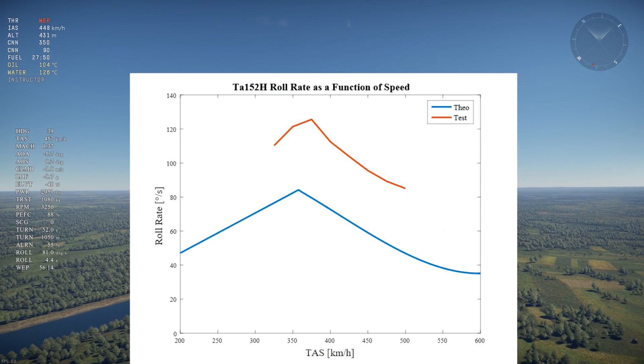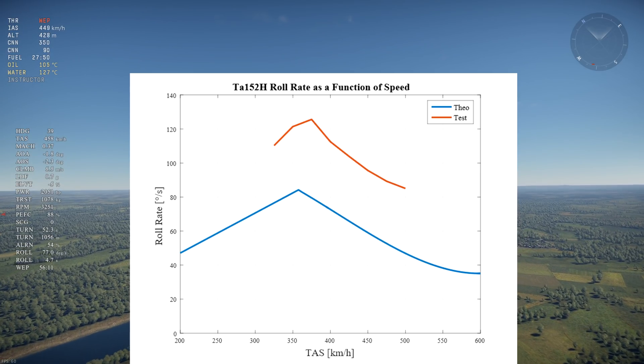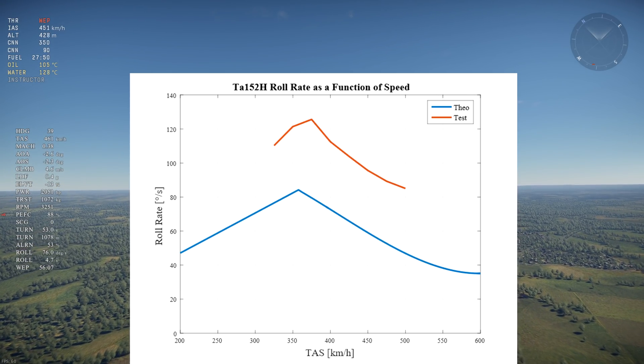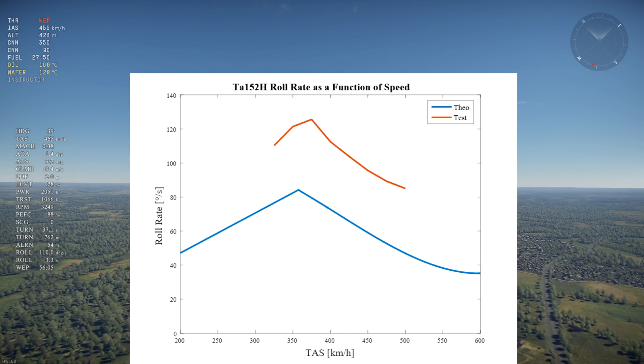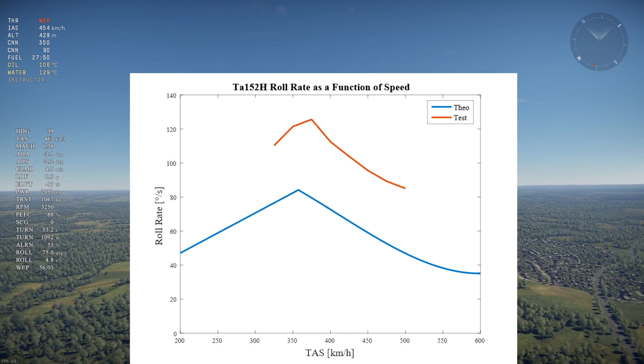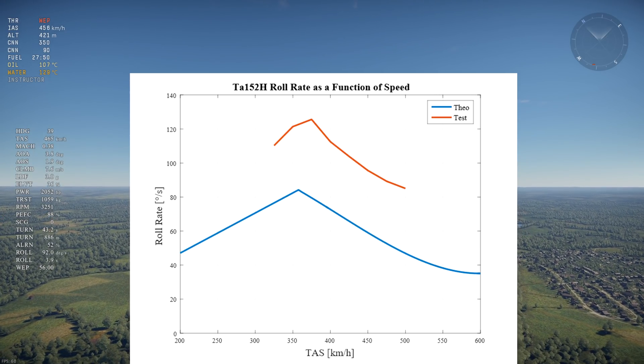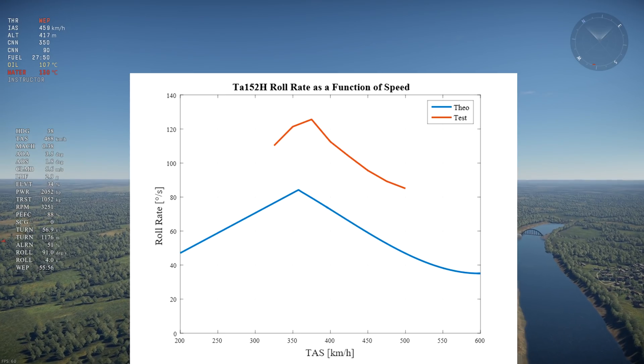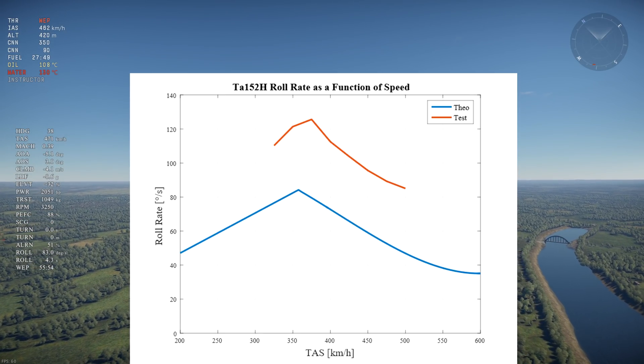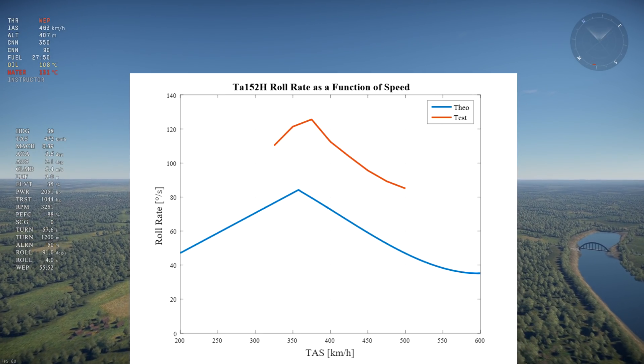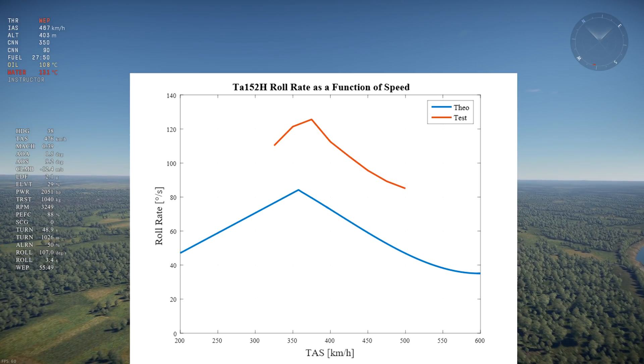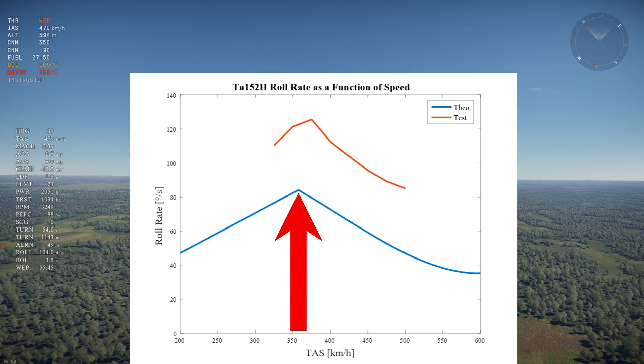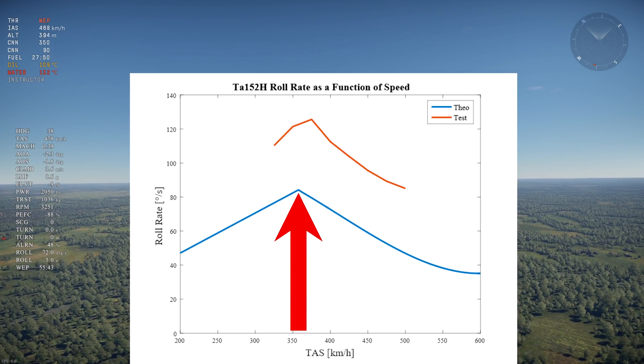On this graph you can see the theoretical roll rate using the formula and taking into account control stiffening in blue, and the test flight roll rate in red. The reason why the test flight roll rate is significantly higher than the theoretical roll rate is because I'm not taking into account secondary contributors to roll such as rudder, side slip, and dihedral. The theoretical curve still predicts the correct tendency however. You can clearly see that the roll rate increases until it reaches the control stiffening speed of 360 kph and then decreases beyond that speed.